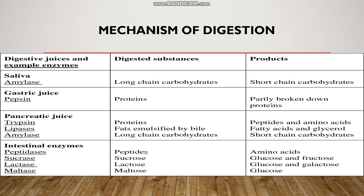What are the end products of digestion in our body? The end product of protein digestion is amino acids. The end product of carbohydrate digestion is glucose. The end product of fat digestion is fatty acids and glycerol.